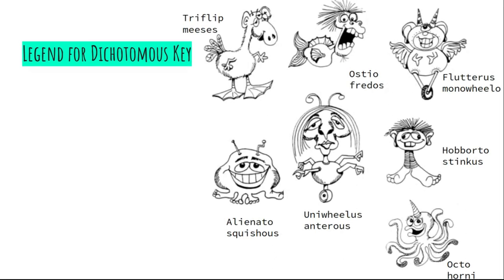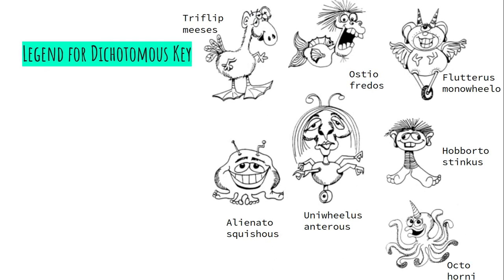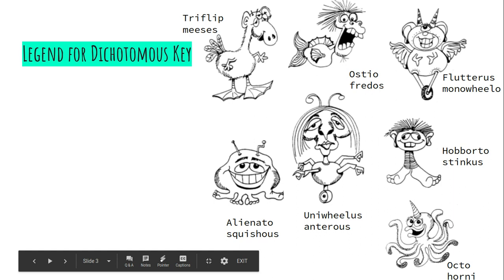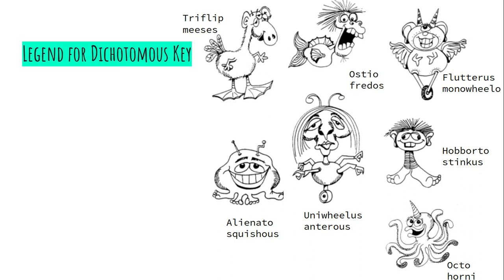To start the process of a dichotomous key, you have to start by making your legend. The best part about a dichotomous key is that it's pretty easy to figure out how many steps you have based off of how many different species you have. I have seven different organisms, so I will have six steps. For however many animals you have on your poster, you're going to have one less step. You'll see how this works as I go through.